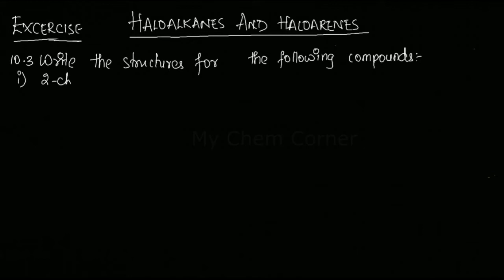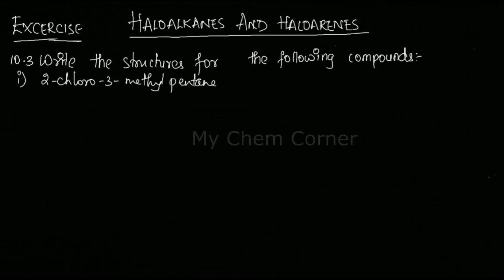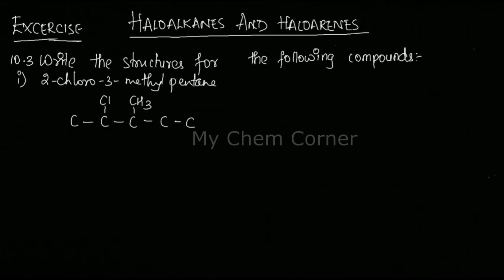The first one is 2-chloro-3-methylpentane. Whenever you get a compound like this and want to draw the structure, first observe what is the parent hydrocarbon. The parent hydrocarbon is a five-member chain, so I'm drawing five carbons. Starting from either left or right, I'm putting Cl at the second position and a methyl group at the third position. Then fill in the hydrogens so each carbon has four bonds: CH3, H, H, CH3.